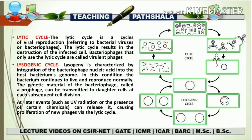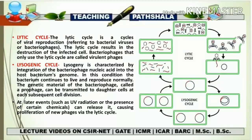Initially only one bacterium has the integrated genome, but after formation of daughter cells, those daughter cells also carry the same genome. In this way the phage continues reproduction via bacterial cell division. The main hallmarks of the lysogenic cycle are: integration of the phage DNA into the bacterial genome, and no destruction of the bacterial cell.